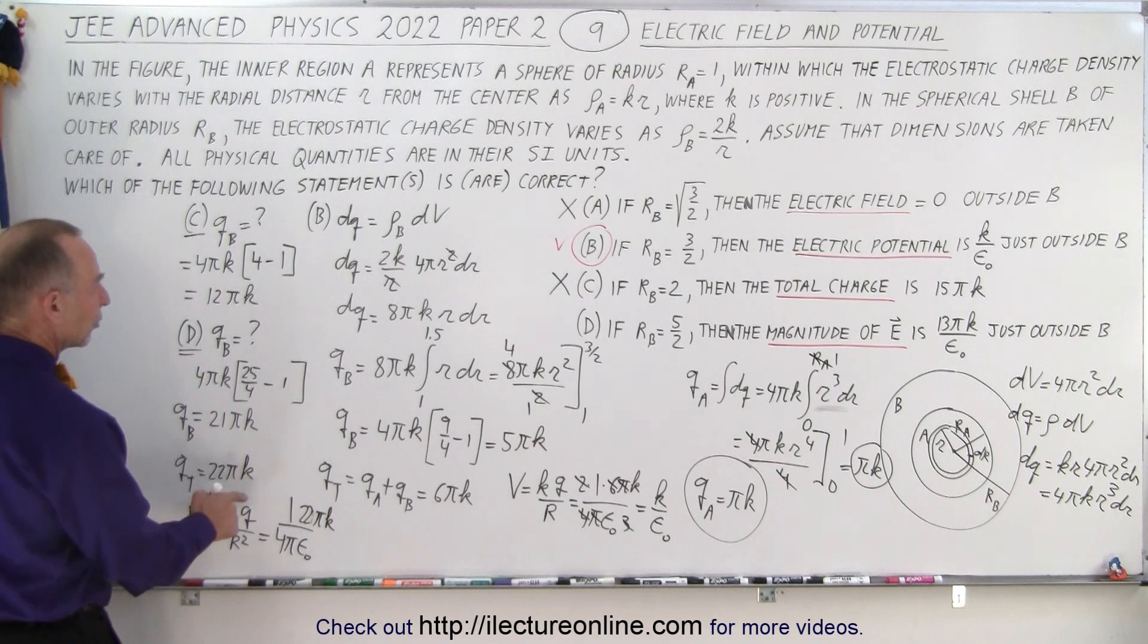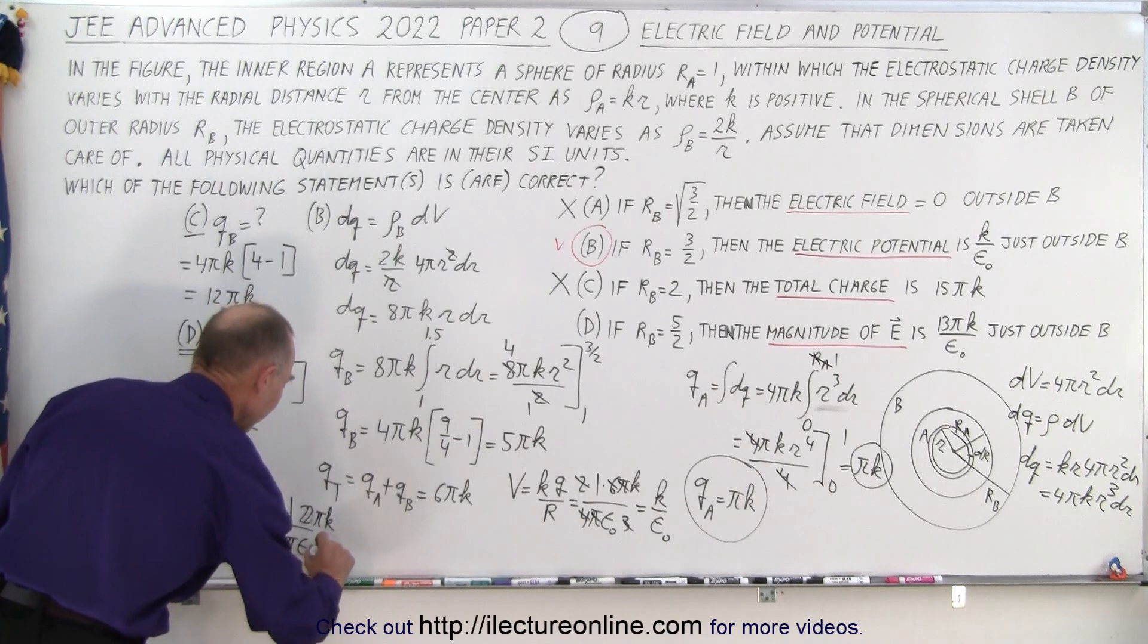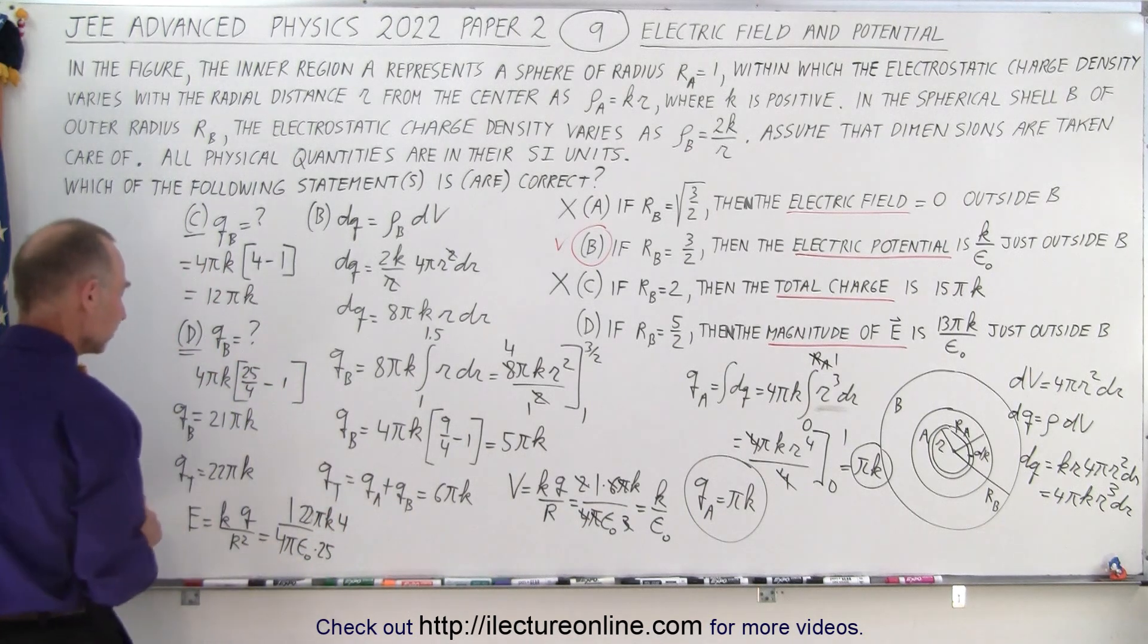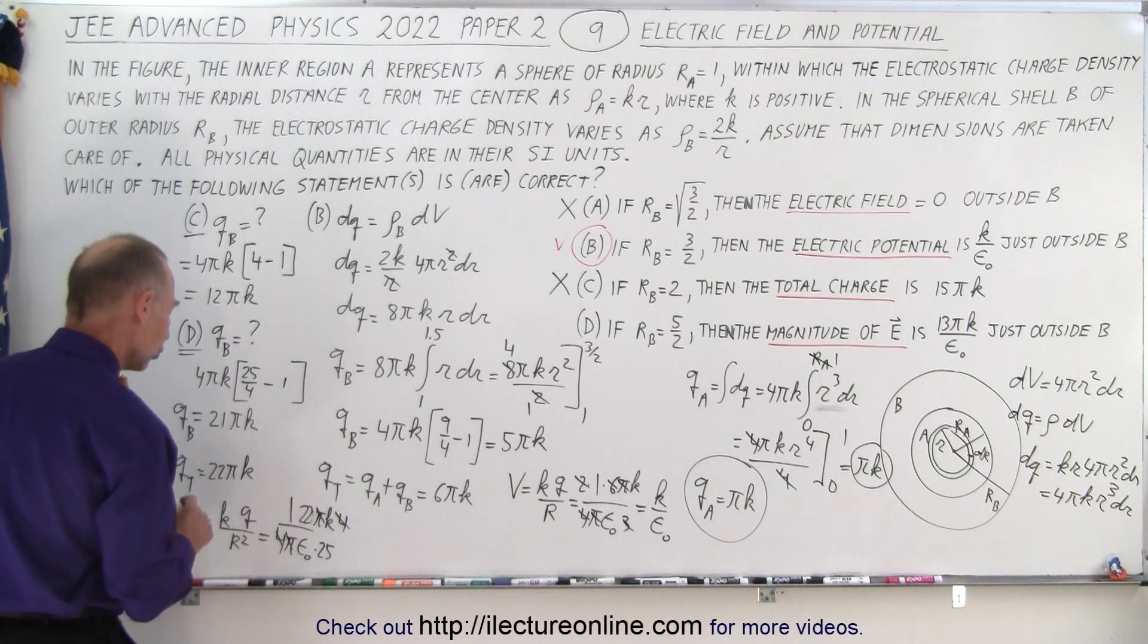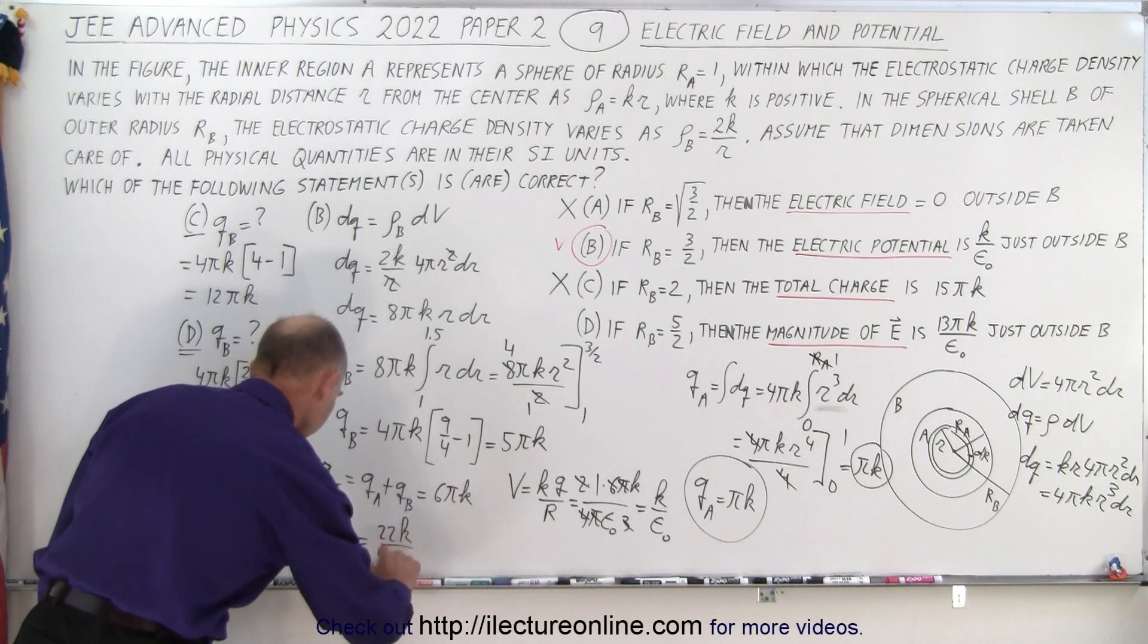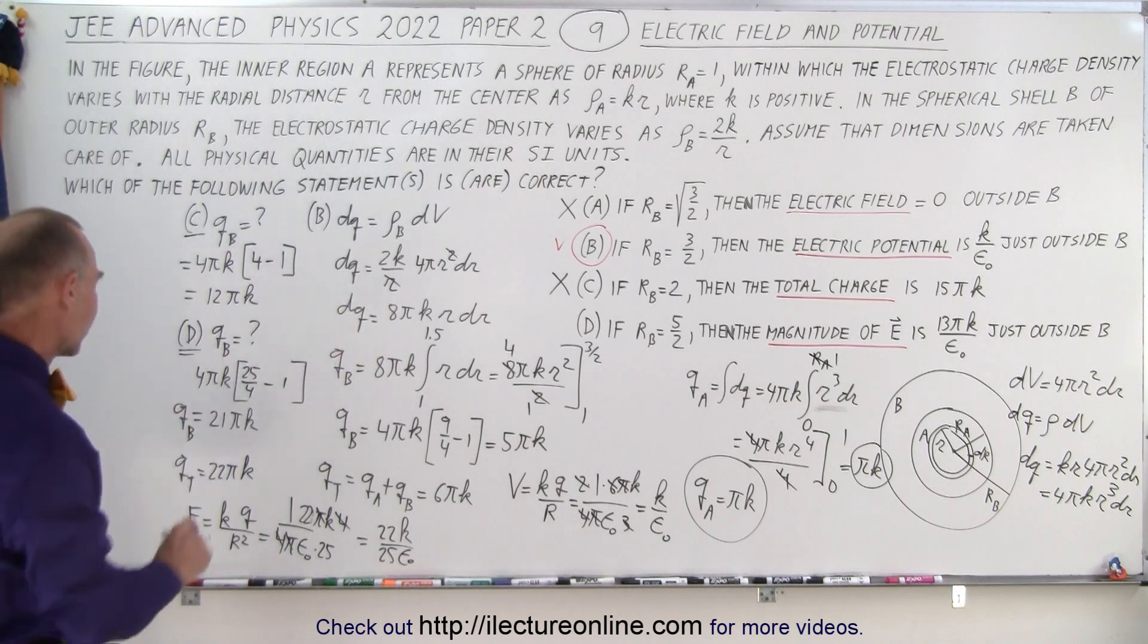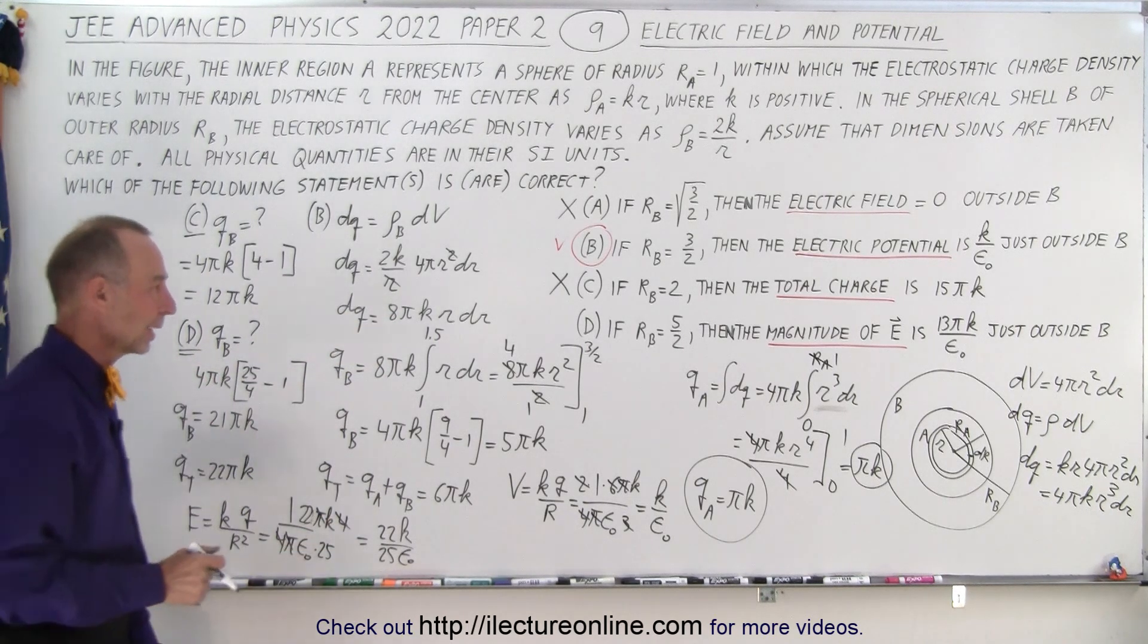Now, q is now going to be 22 pi k. And r squared, well, the radius r squared is now 5 over 2, so that would be 25 over 4, and that's why we put the 4 in the numerator. The 4 again cancels out. The pi cancels out. So I end up with 22k over 25 epsilon sub-naut. Is that the answer we got over there? No, they claim it should be 13 pi k over epsilon sub-naut. So we don't have the right answer.